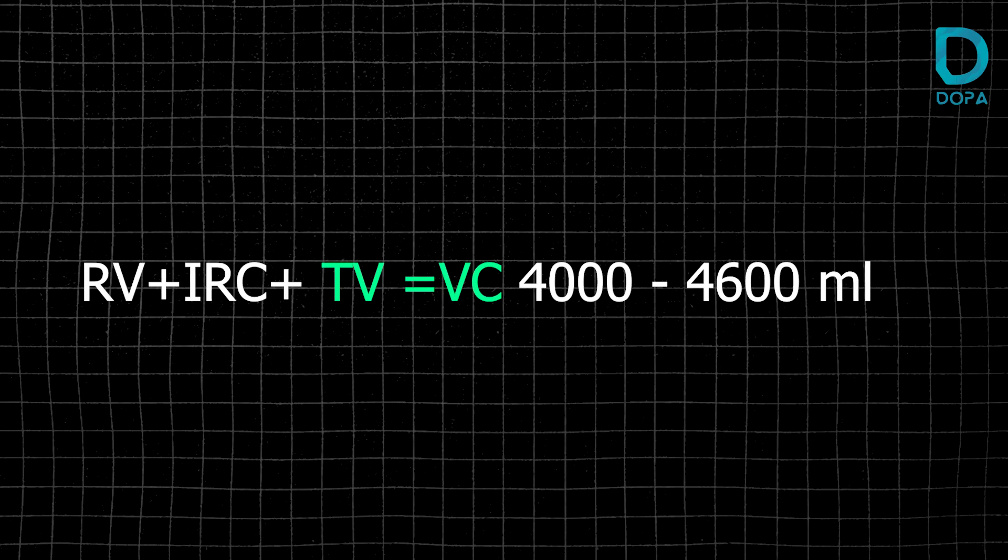If TV is equal to 500, IRV is equal to 1,500 to 3,000, and ERV is equal to 1,000 to 1,100, then the lower limit is 500 plus 2,500 plus 1,000 equals 4,000. The upper limit is 500 plus 3,000 plus 1,100 equals 4,600. So vital capacity ranges from 4,000 to 4,600 ml. And what about total lung capacity?